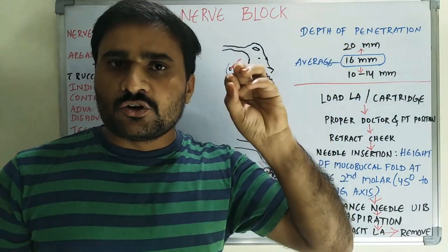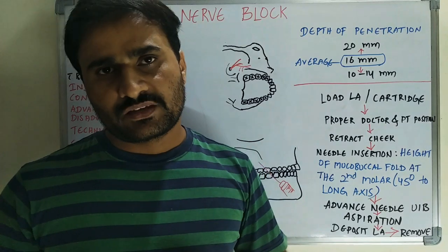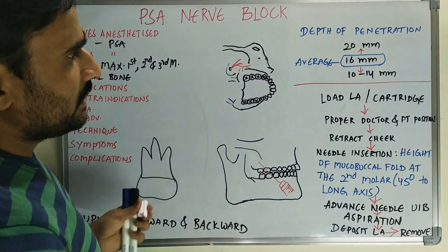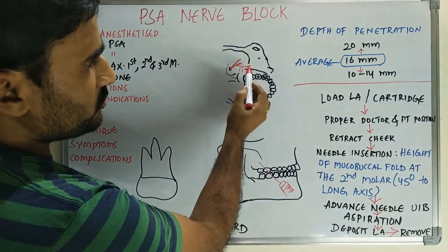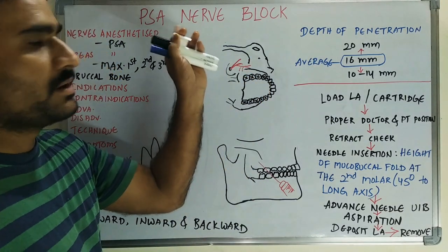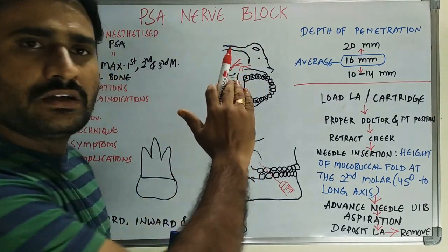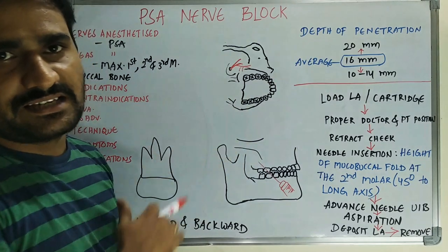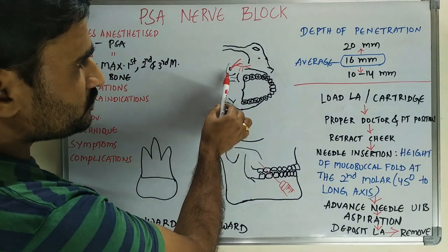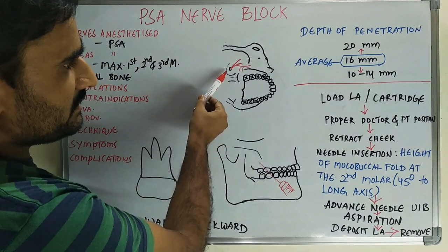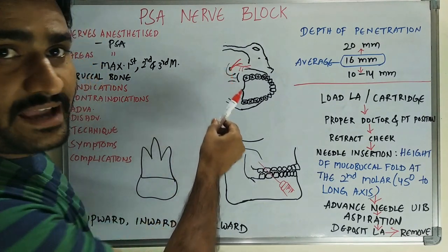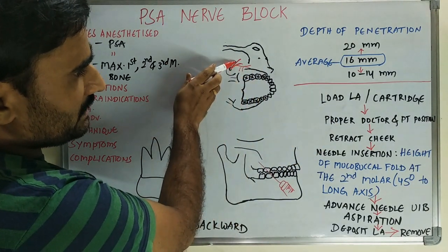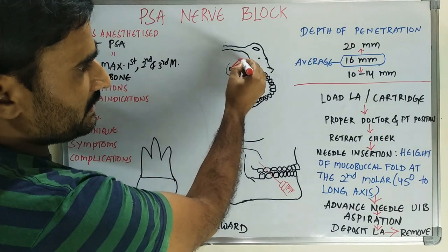In the pterygopalatine fossa there are pterygoid venous plexuses, as you can see in this diagram. This is the maxillary arch and this is the zygomatic arch. The area of interest in the PSA nerve block is posterior to the zygomaticomaxillary buttress or onto the posterior lateral surface of the maxilla. This is the pterygopalatine fossa region, and this is the foramen rotundum from where the maxillary nerve exits the skull.